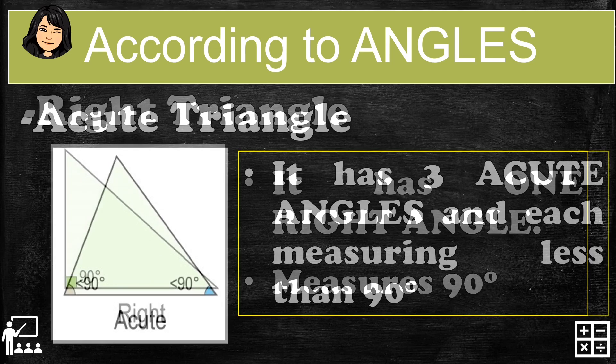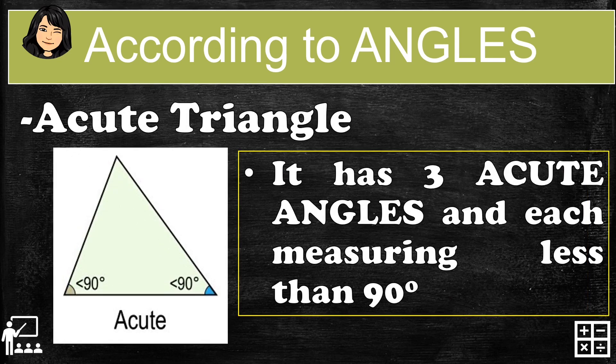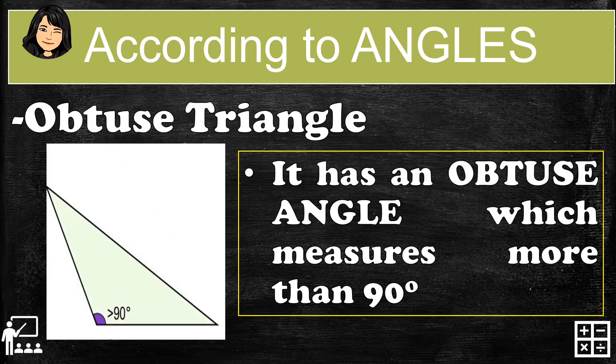Second is the acute triangle — it has three acute angles and each measures less than 90 degrees. The obtuse triangle has an obtuse angle which measures more than 90 degrees.